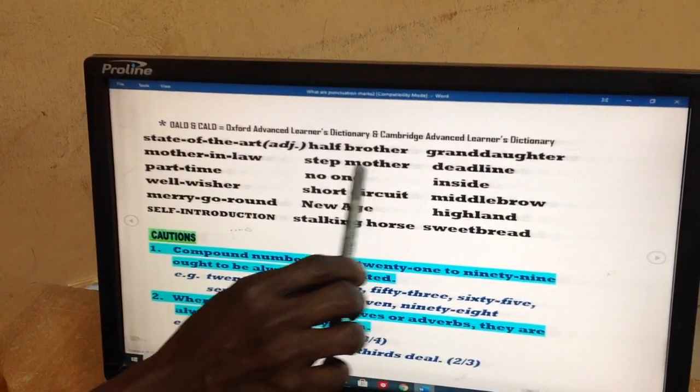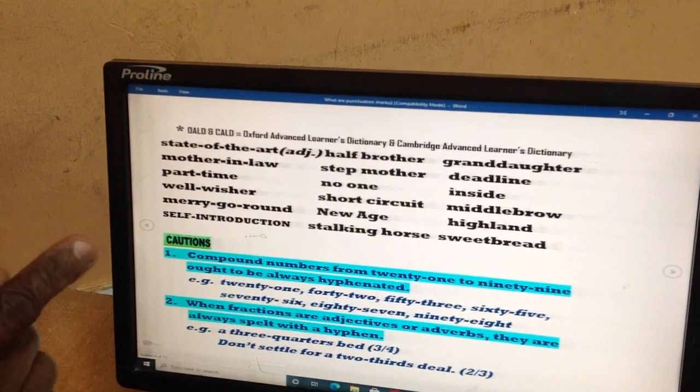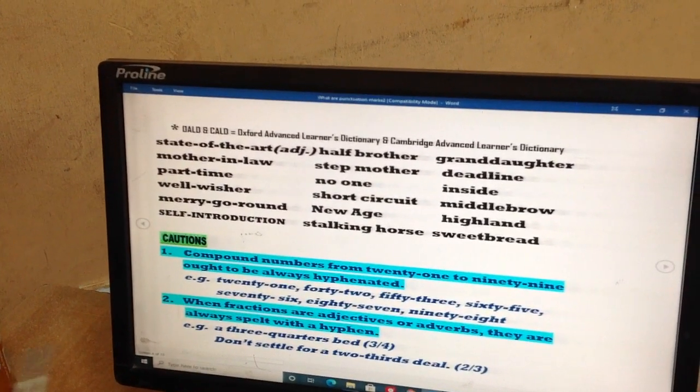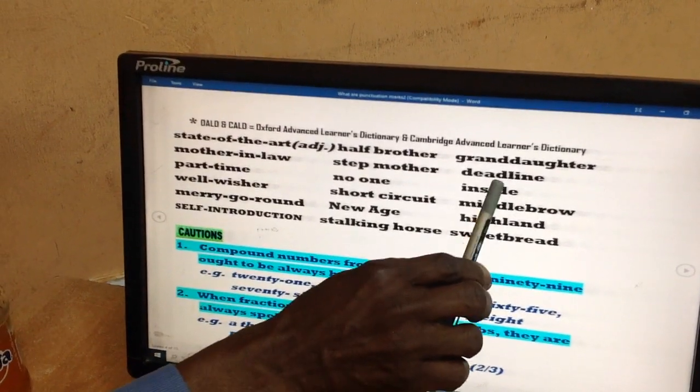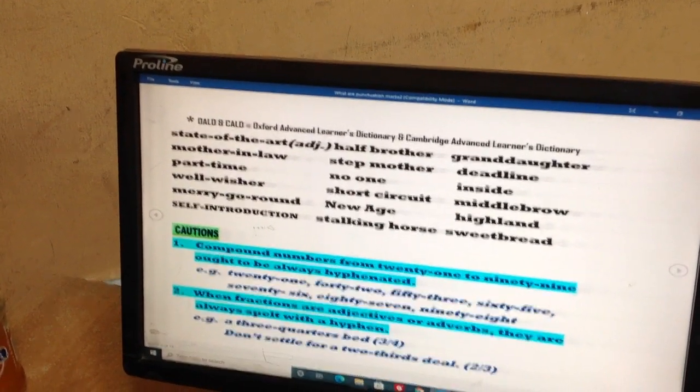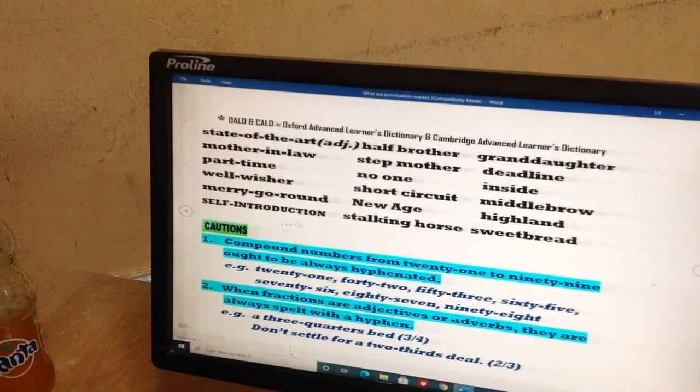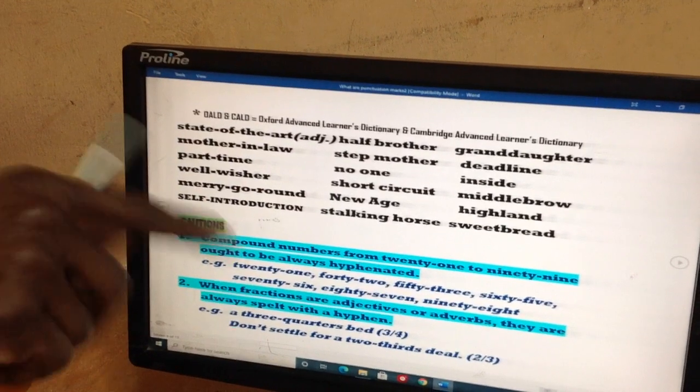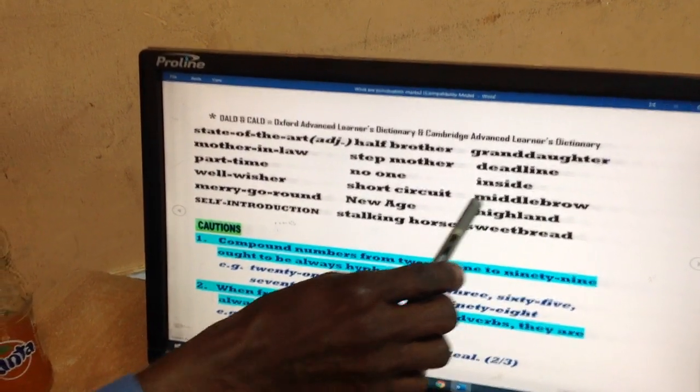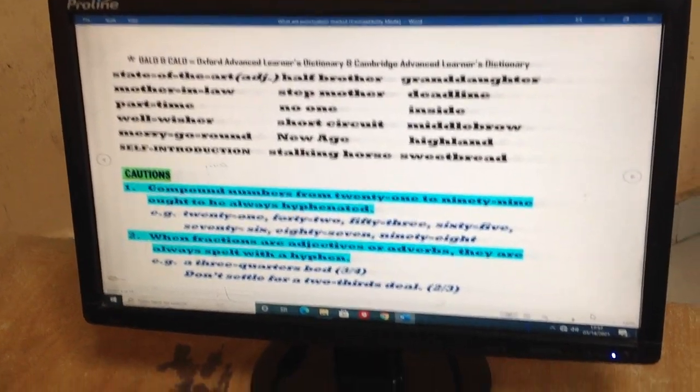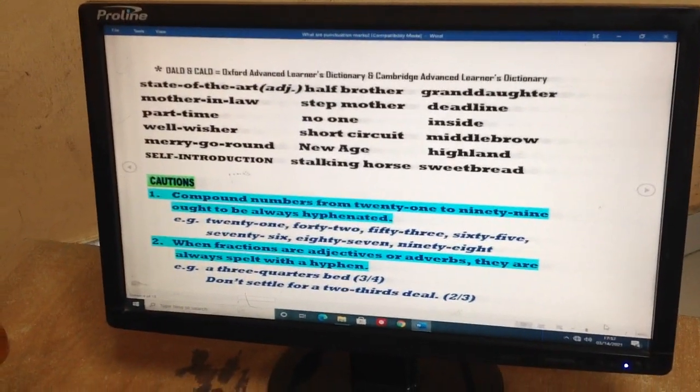Step-mother, step-father, half-brother. This would be open compound: two words carrying one meaning. When I write deadline as one solid compound, I mean the last date to submit something. Inside, we have in and aside. The two create one meaning to mean in the interior of something. Middlebrow is easy. Low brow, high brow. This is middlebrow. It's also a solid compound.